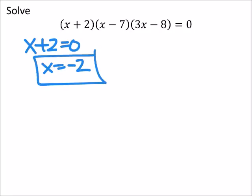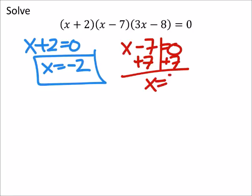So this would give us a true statement. What about x minus 7? We need this to equal zero, so adding 7 to both sides. And we get x is 7.